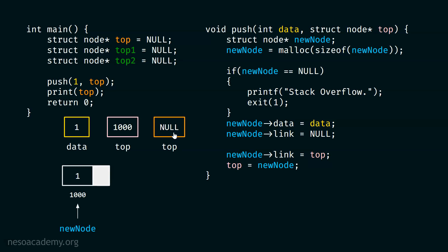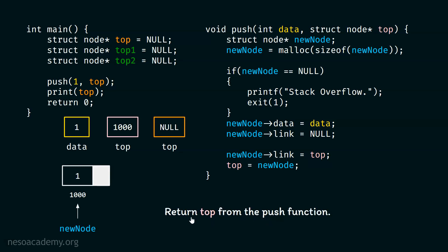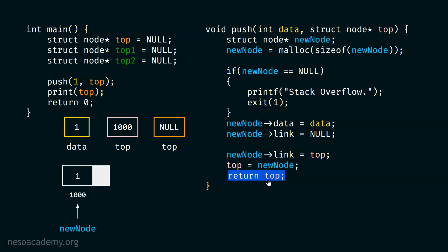Now you understand why we got the stack underflow message. Our push function is working fine, but the changes made to push's top pointer never get reflected back to main's top pointer — that is why top is still null. But there is a simple solution to this problem: we can simply return top from the push function. We can write the line of code: return top.